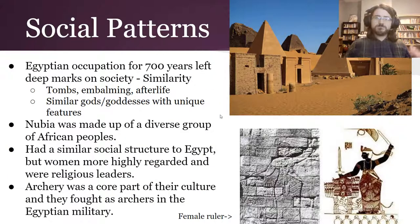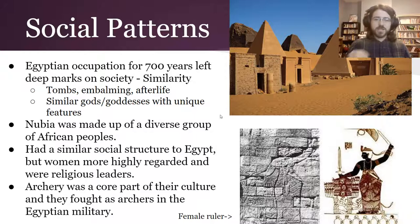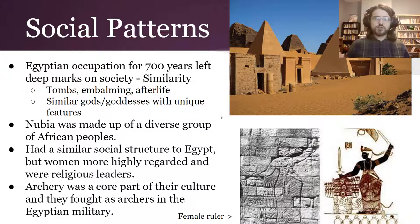Now, social patterns: the Egyptians occupied almost all of this area for 700 years and left deep marks on society. There are tombs in Nubia, embalming practices, evidence of belief in an afterlife, and gods and goddesses — they're similar to Egypt's but have unique features; it's not a one-for-one copy. Nubia was made up of a diverse group of different African peoples, and you can see that in Egyptian inscriptions showing different skin colors of visiting peoples during trade missions.